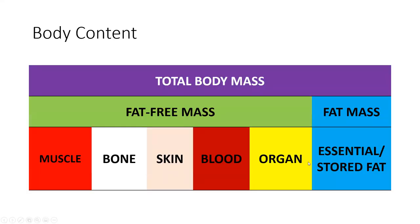When we split our body composition, we have what is called fat-free mass and fat mass. Fat-free mass is our muscles, bone, skin, blood, organs, and connective tissue — everything that is water-based and in most cases either helps with function or can help with movement, like our bone and muscle, what we've been talking about this semester. The other side is our fat mass, which is made up of our essential fat and our stored fat.